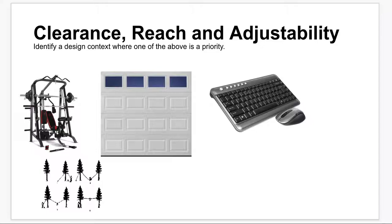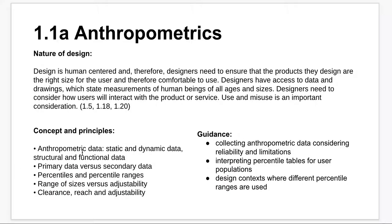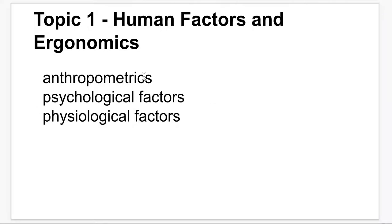That's it for human factors and ergonomics. To remind you, we've covered static versus dynamic data — also called structural and functional — primary data versus secondary data, percentiles and percentile ranges, range of sizes, adjustability, clearance, reach, how to collect data and how reliable it is, how user populations change, and how you can use percentile ranges for different products, as well as reach, clearance, and adjustability. Next up is psychological factors and physiological factors. Remember to please complete that form. Thanks for watching, bye.